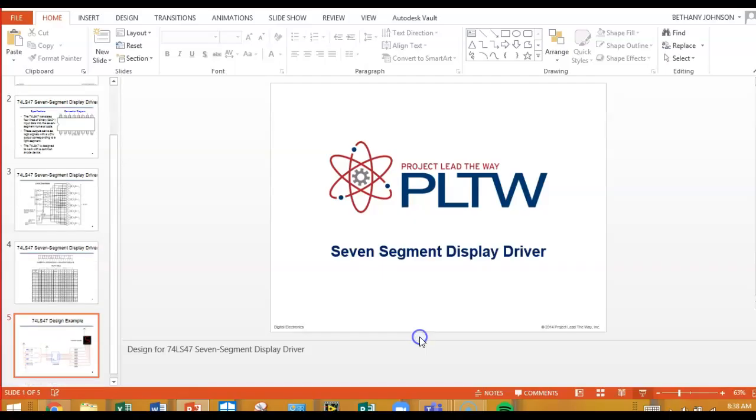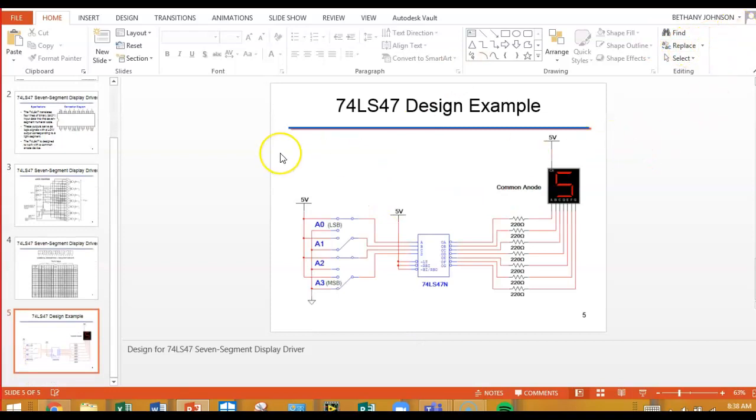So that is the end. Now in the assignment that I'm going to make for you, which I haven't made yet, but I'll have it done by the end of today, you will see a question about the 7448 and the common cathode. It's hooked up the same exact way. But if you use a 7447 with a common cathode, it will not work. So that's it. I told you this was going to be short.